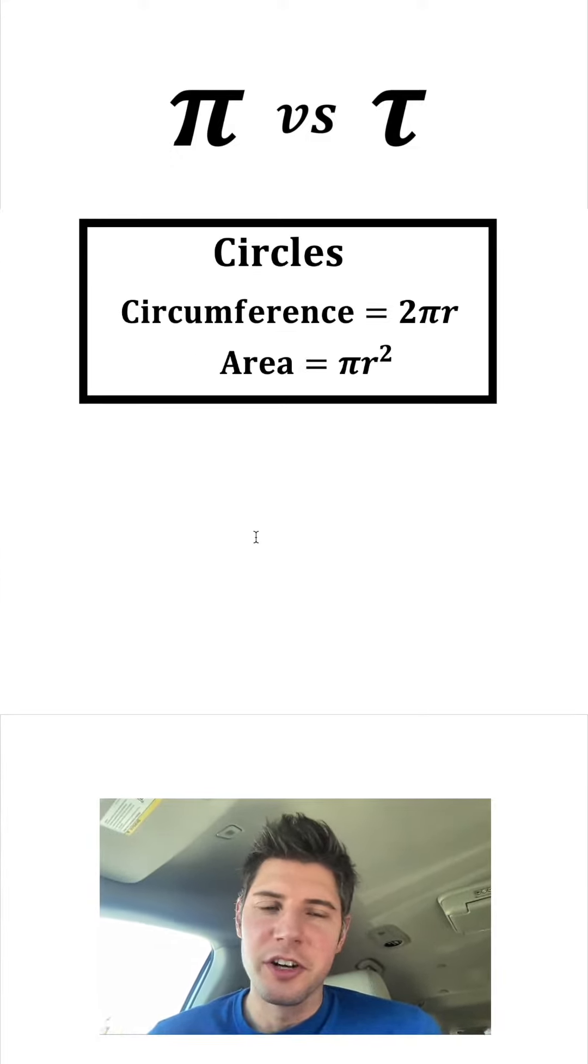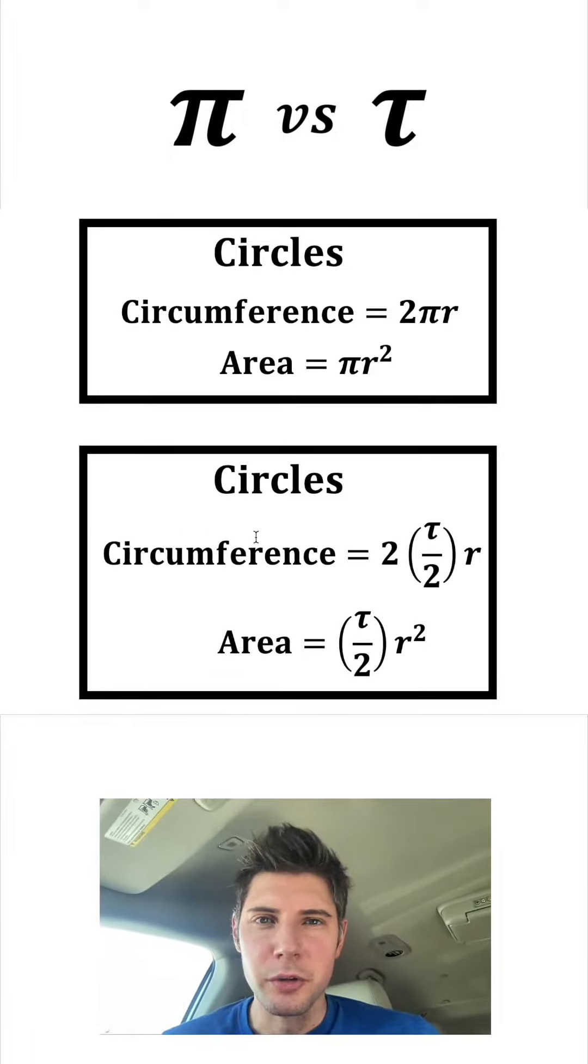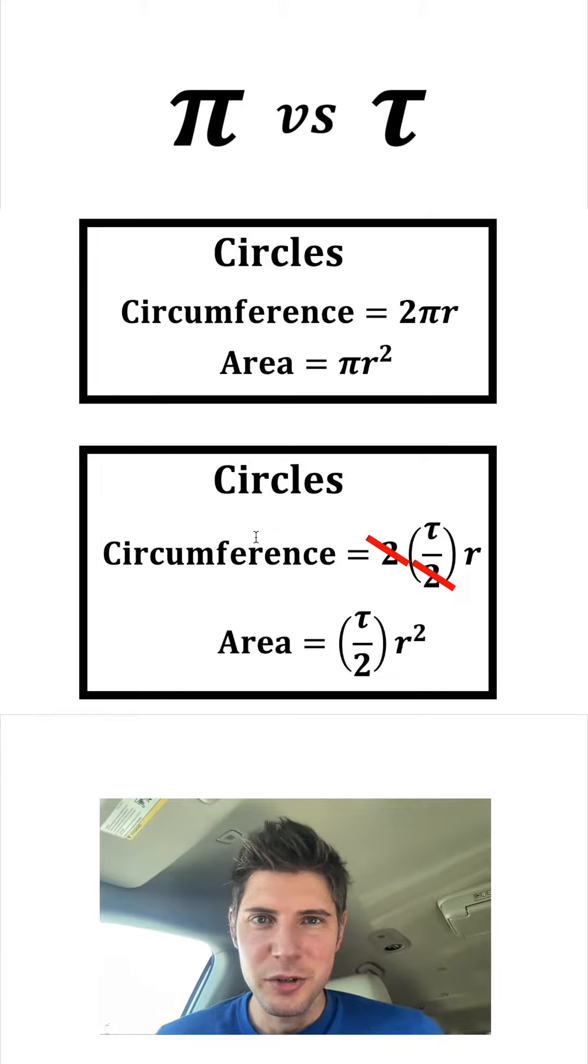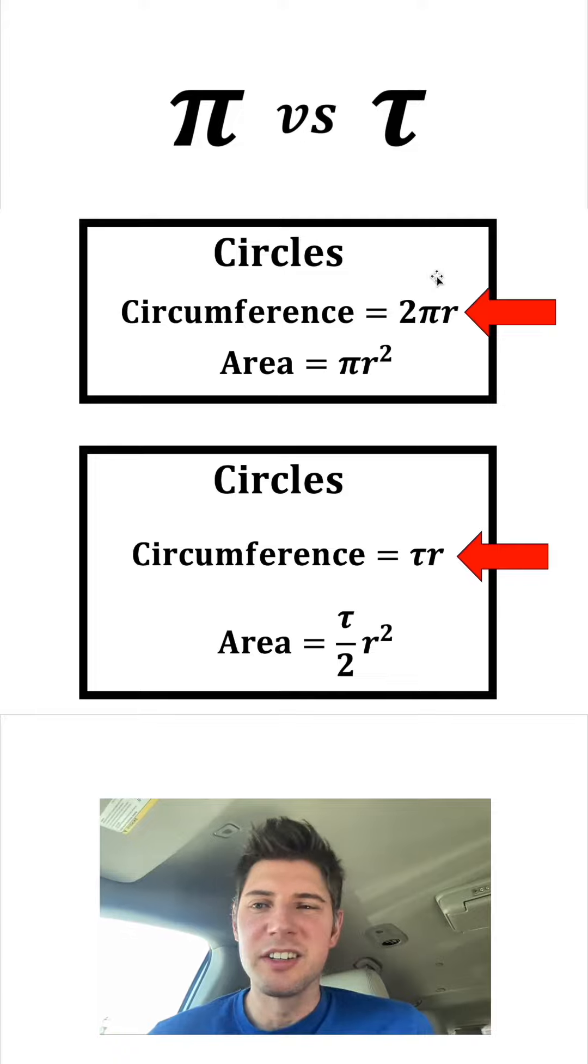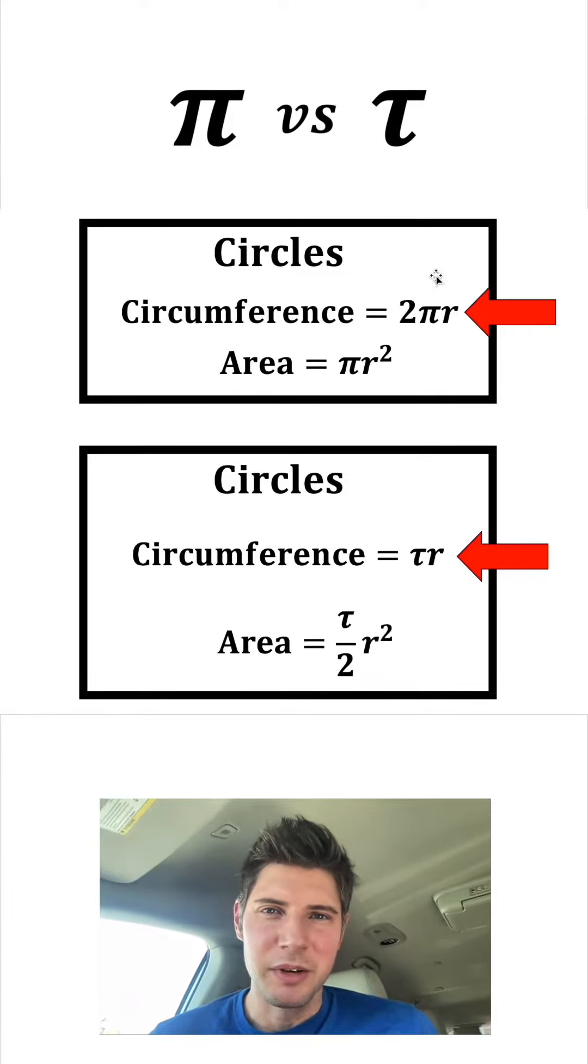So let's talk about circles. The circumference is 2πr and the area is πr². And let's replace the pi with τ/2. For the circumference, we can cancel out these twos and it just becomes τr. Looking at the circumference, tau times r is kind of nice. This two here makes it a little less elegant, but I really don't think it's that big of a deal.